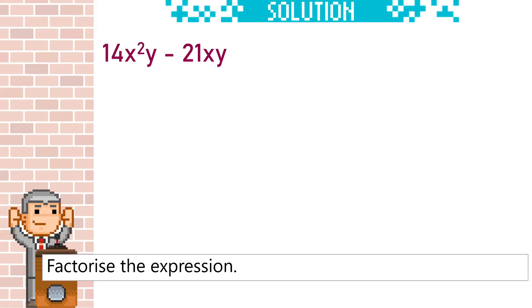We start by finding the number common factor of these two terms. 14 and 21 are both in the 7 times table. And then we look at the letter common factor.